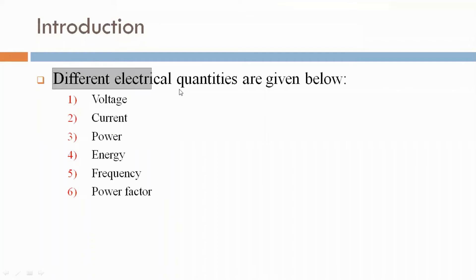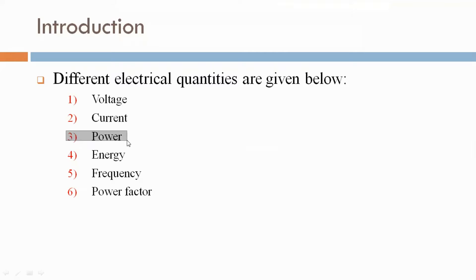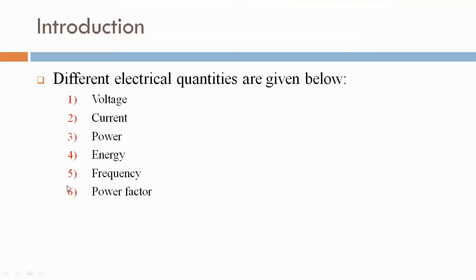Different electrical quantities are given below: first, voltage; second, current; third, power; fourth, energy; fifth, frequency; sixth, power factor.